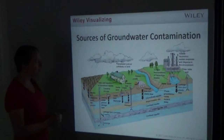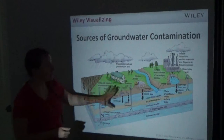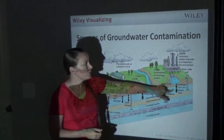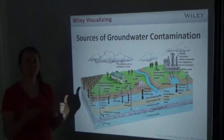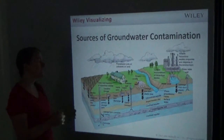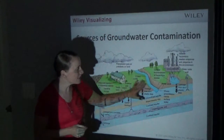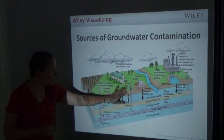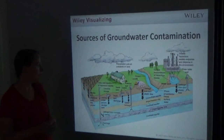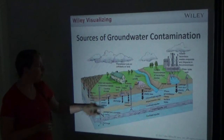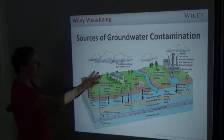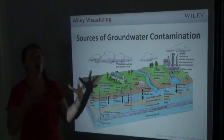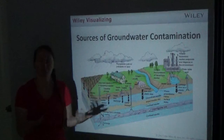A diagram of groundwater contamination sources shows a power plant releasing thermal pollution, a stream with runoff from surrounding areas, a sewer line dumping into the area, a leaking underground storage tank with gasoline, and fertilizers and pesticides washing off from an agricultural area — all kinds of pollution sources in one little diagram.